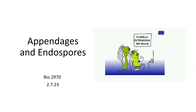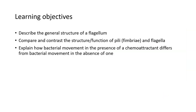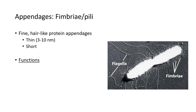In this lecture, we're going to be talking about some of the bacterial structures that exist outside of the cell wall, including flagella and fimbria or pili. We're also going to talk about how bacteria use these different structures to move and how chemoattractants can actually influence bacterial movement.